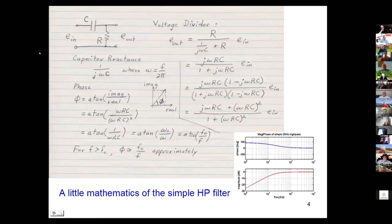Let's look at a simple high-pass filter, which is a capacitor feeding a resistor. This is a potential divider. The reactance of the capacitor is 1 over j omega c. The output voltage is just the resistance divided by the resistance plus the equivalent of the capacitor.